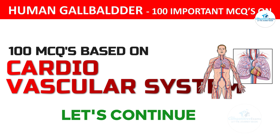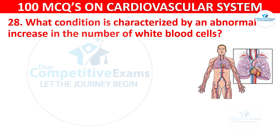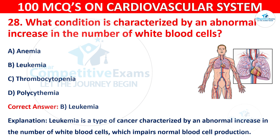Question 28: What condition is characterized by an abnormal increase in the number of white blood cells? Your options are: Anemia, Leukemia, Thrombocytopenia, or Polycythemia. The correct answer is B, Leukemia. Leukemia is a type of cancer characterized by an abnormal increase in the number of white blood cells, which impairs normal blood cell production.